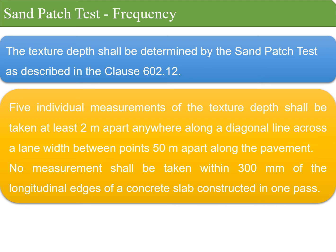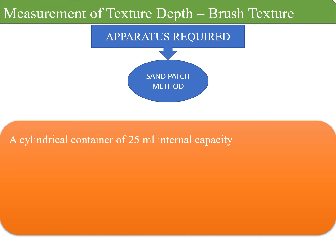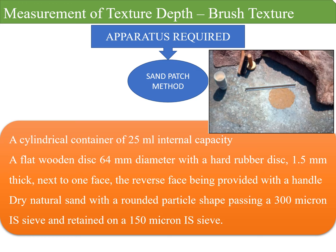No measurement shall be taken within 300 millimeters of the longitudinal edges of a concrete slab constructed in one pass. The parameters required to conduct a sand patch test include a cylindrical container of 25 millimeters, a flat wooden disc of 64 millimeters diameter with a hard rubber disc 1.5 millimeters thick on one face and a handle on the reverse face so that the disc can be rotated on the surface. Dry natural sand with rounded particle shape passing 300 micron IS sieve and retained on 150 micron IS sieve is used as the test sample.